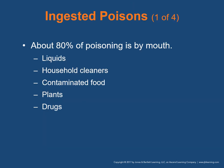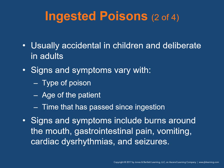About 80% of poisonings are by mouth — ingestion. These include different liquids, household cleaners, contaminated food, water, plants, and drugs. Usually it's accidental in children and deliberate in adults. Signs and symptoms vary with the type of poison, the age and weight of the patient, and the time that's passed since ingestion. Signs may include burns around the mouth, gastrointestinal pain, vomiting, cardiac dysrhythmias — an ALS issue — and seizures. Seizure patients from poisonings should be seen by a paramedic.